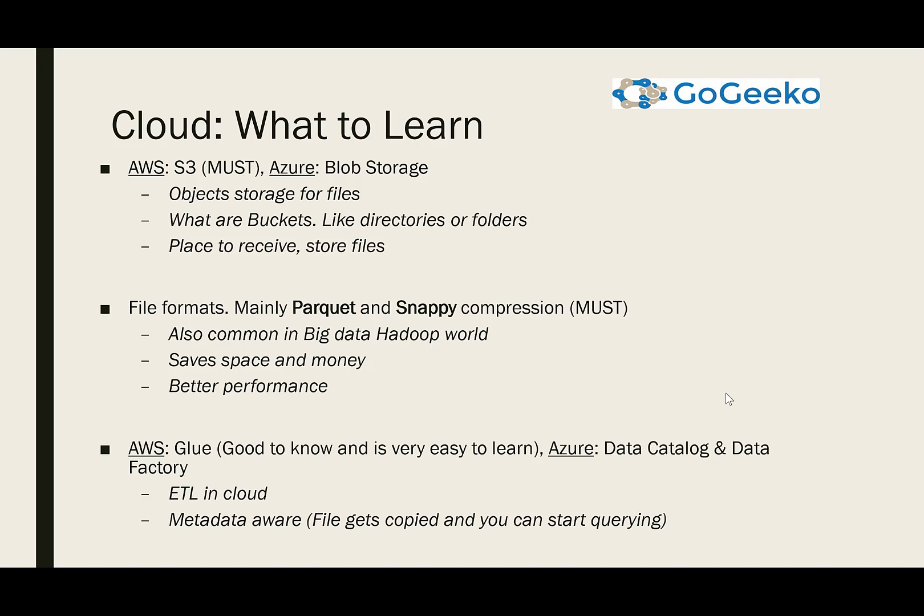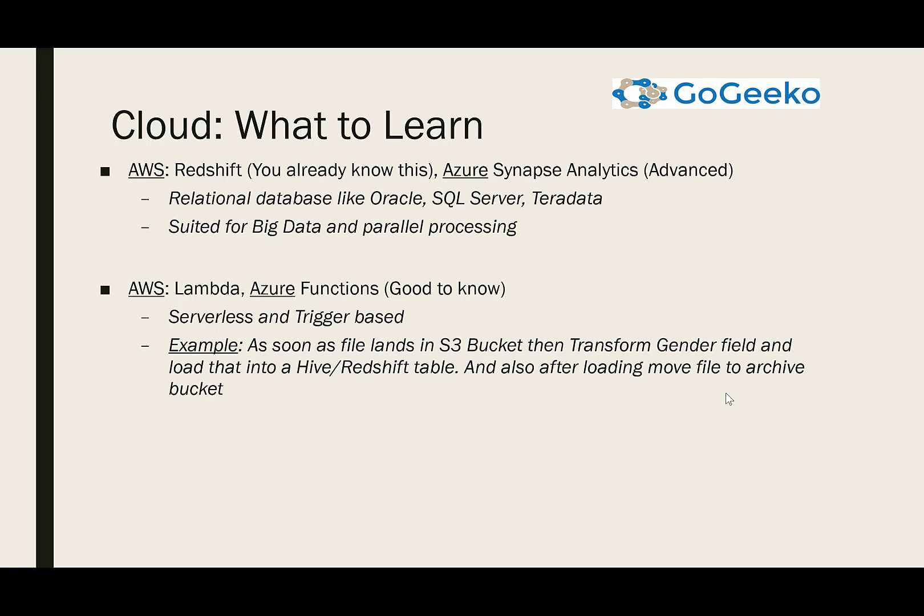In Azure you have Data Catalog and Data Factory as equivalents to Glue. Redshift is basically a relational database like Oracle, SQL Server, or Teradata — the key difference is it's massively parallel processing. You already know SQL, so that's good enough for Redshift. AWS Lambda and Azure Functions are also good to know, because with serverless and trigger-based computing you don't need to buy or pay for dedicated compute.